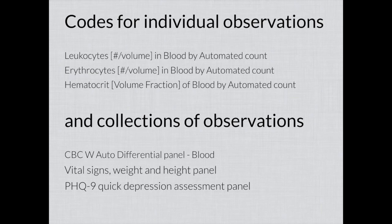LOINC creates codes for individual observations — things like white blood cell count, red blood cell count — but it also creates codes for collections of observations, which we generally call panels. A CBC, a collection of vital signs, or a set of questions on the PHQ-9 are examples. LOINC creates codes to represent the collection and hooks up the individual elements that go along with it as well — codes for individual observations and codes for collections.